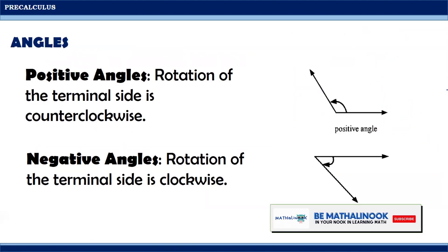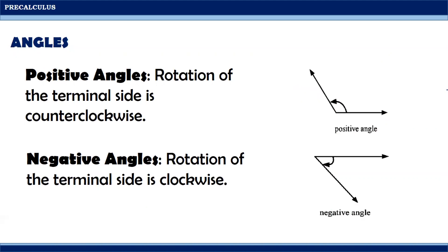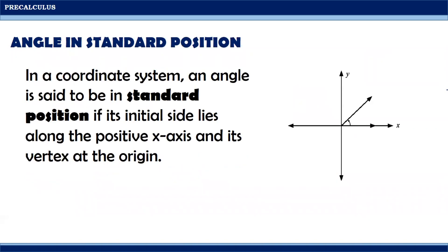We have discussed previously that positive angles are formed when the rotation of the terminal side is in counterclockwise direction. On the other hand, negative angles are formed when the rotation of the terminal side is in clockwise direction. Moreover, in a coordinate system, an angle is said to be in standard position if its initial side lies along the positive x-axis and its vertex at the origin.